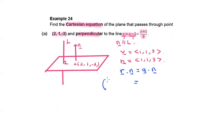R is (x, y, z), dot the normal is (1, 1, 3), equals to the position vector A (2, 1, -3), dot the normal (1, 1, 3).